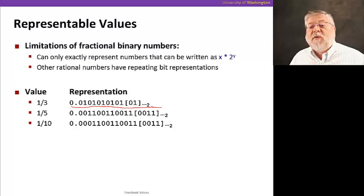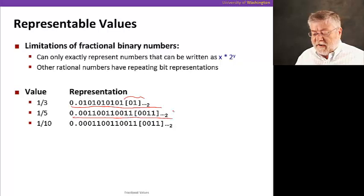One-third is actually going to be this bit pattern, and you'll notice that that 010101 is a repeating pattern, and we'll use square brackets to represent that repeating pattern. There's other numbers like that in binary.